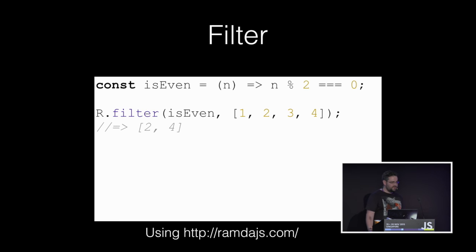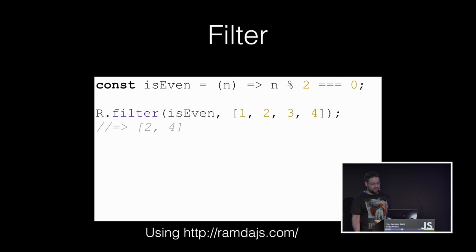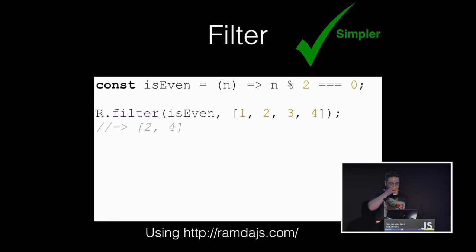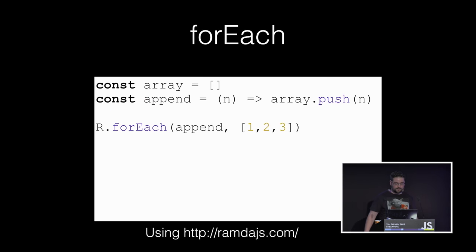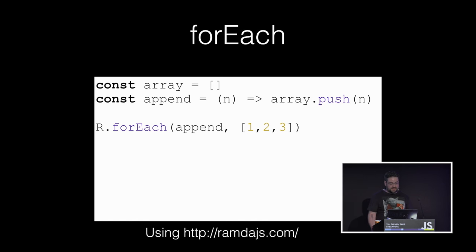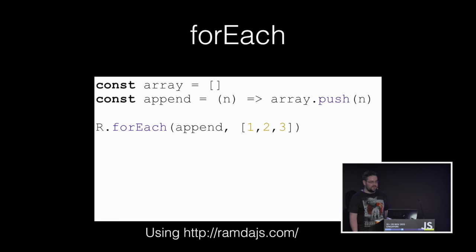Filter is another common higher-order function that produces a new collection with any items that do not pass a truth test removed. For each is technically a higher-order function, but it's basically a loop with a step defined as a function because there's no output value. Because there's no output value, its only use is as an impure step function that changes state or has side effects — valid only perhaps for debugging or intentional side effects. It is definitely simpler to use reduce, filter, map, or similar functions for working with and transforming collections.